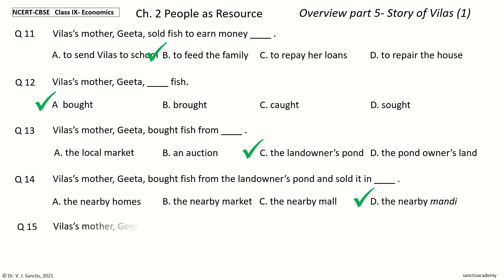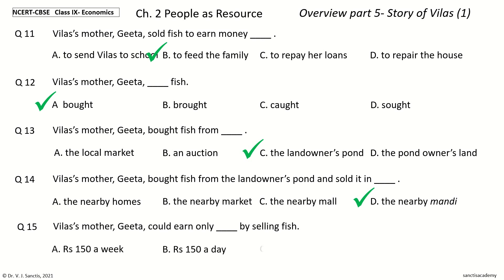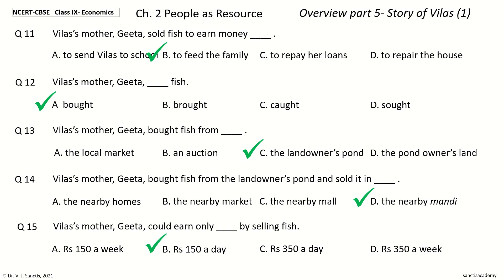Question 15 (last question): Vilas's mother Geeta could earn only dash by selling fish. The options are: a) Rs. 150 a week, b) Rs. 150 a day, c) Rs. 350 a day, d) Rs. 350 a week. And the answer is Rs. 150 a day. So Vilas's mother Geeta could earn only Rs. 150 a day by selling fish.